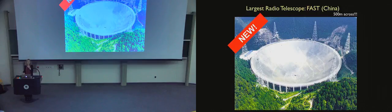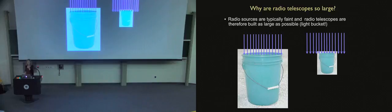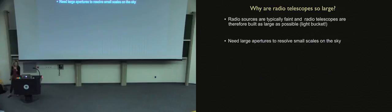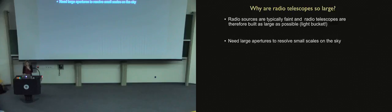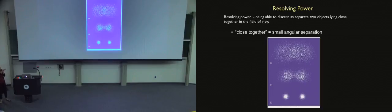Radio telescopes are huge. Why are they so enormous? Typically, radio sources are faint, and radio telescopes have to be built as big as possible to collect as much light as possible - your telescope is your light bucket. But the other reason is that we need large apertures to resolve small angular scales on the sky, because of a phenomenon called diffraction. What we want to do is separate two objects which are close together on the sky and actually see them as separate blobs rather than fuzzy and blurry in our images.